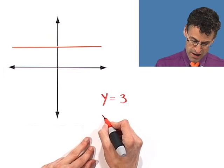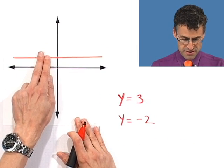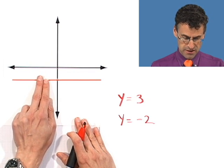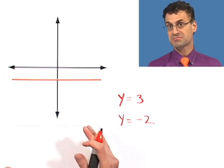How about y equals negative two? Well, that just means that it's all the points for which the y value is negative two, and that's a straight line that is horizontal located at negative two. Boom, there it is. Great.